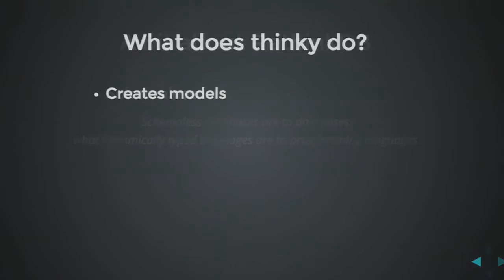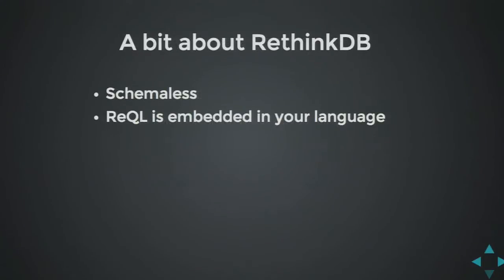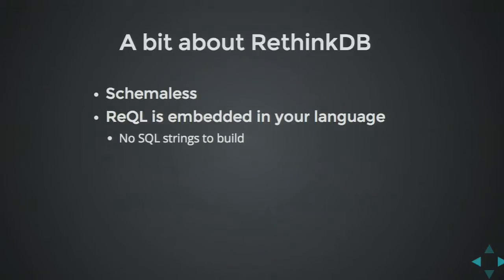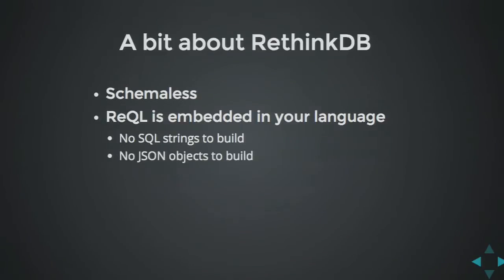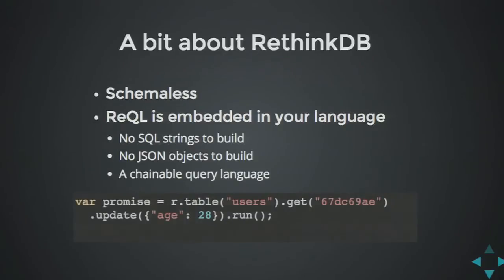RethinkDB has a really nice query language. It's embedded in your language, so if you use Node.js, your query is just plain JavaScript. There's no SQL string to build, no strings to concatenate, no escaping to avoid SQL injection. It's just JavaScript. You don't have JSON objects to build like in MongoDB where you have to use special keys with a dollar sign. You just have a plain, simple, chainable query language.